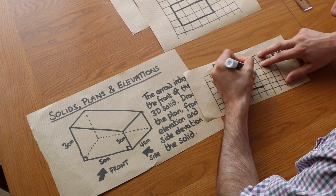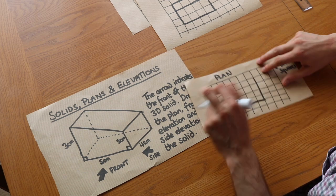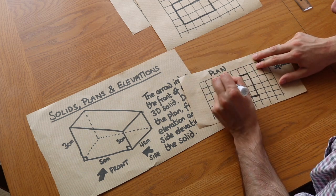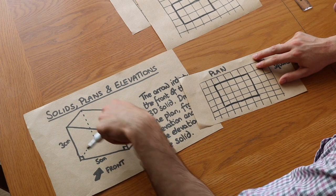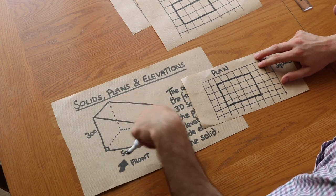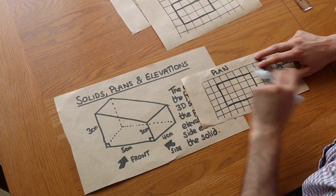And it doesn't matter what rotation it is. So I could rotate it like this and it would still be the same plan. So we get that. And there's no ridges or anything like that from the top. No break in that surface there. So that's what we'd see from the top.